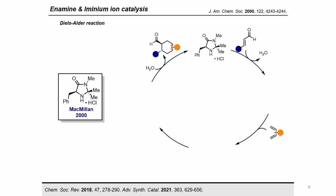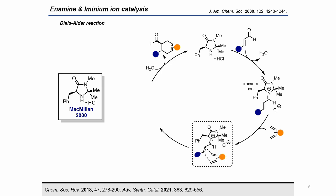The same year List reported an enantioselective aldol reaction, MacMillan published the development of first-generation imidazolidinone organocatalysts and their application to the enantioselective Diels-Alder reaction. In this case, the initial condensation with an alpha-beta unsaturated aldehyde forms the iminium ion, which reacts with the diene to form two contiguous stereocenters. The selectivity of the reaction is sterically controlled by the benzyl group in the catalyst, and the reaction occurs through the less hindered face. As in the previous case, the catalyst is regenerated by hydrolysis of the iminium ion.